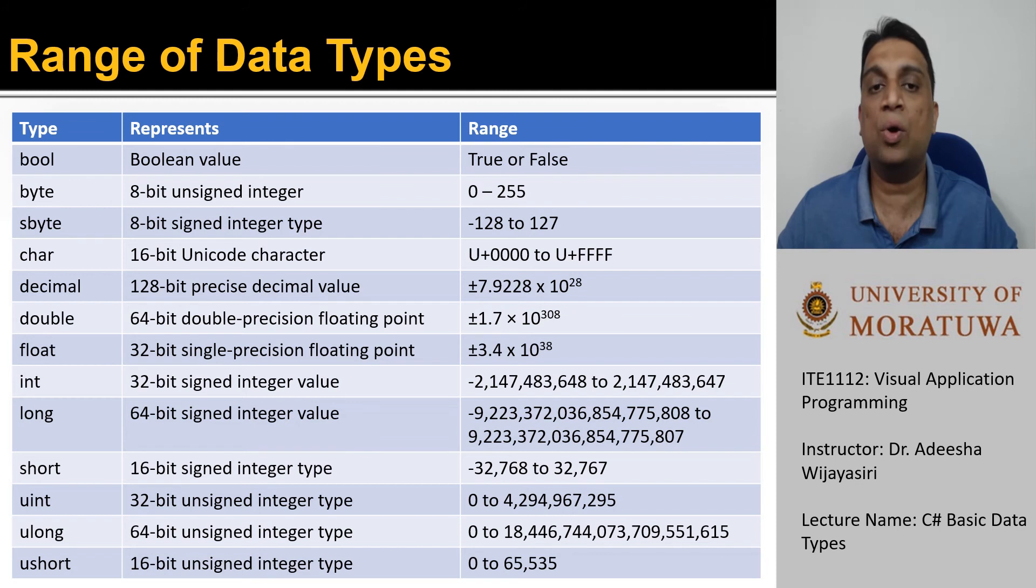Since we need to allocate 1-bit to represent the sign of the number, our range is –128 to plus 127. If you are interested to find out how this range is achieved, you can do further readings on 2's complement in binary numbers.